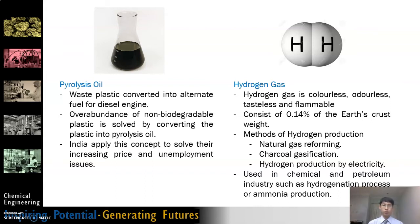Hydrogen gas is also one of our byproducts from the plant. Hydrogen gas is the smallest element in the periodic table, and it is colorless, odorless, tasteless, and flammable. It constitutes about 0.14% of the earth's crust weight. There are three methods of producing hydrogen: natural gas reforming, charcoal gasification, and hydrogen production by electrolysis. It is used in the chemical and petroleum industry such as hydrogenation processes and ammonia production.